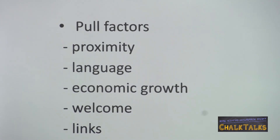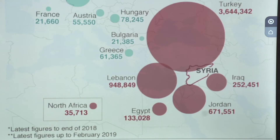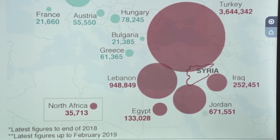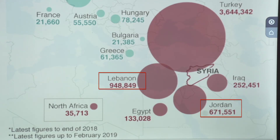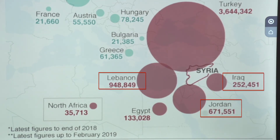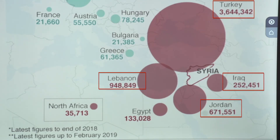For pull factors, you could look at why people have chosen to move to a particular country. Most Syrian refugees settled in countries as close to Syria as possible, as travelling as a refugee is difficult and refugees hope to return home as soon as possible. Many chose countries that speak Arabic, such as Lebanon, Jordan or Iraq, making it easier to communicate. Many others chose Turkey, the country with the strongest economic growth in the area, increasing their chances of earning a living.